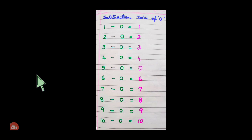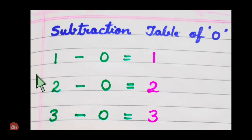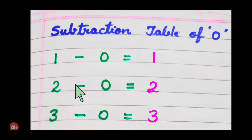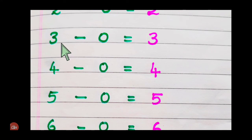Let's start with subtraction table of zero. Let's begin. 1 minus 0, 1. 1 minus 0, 1. 2 minus 0, 2. 2 minus 0, 2. 3 minus 0, 3. 3 minus 0, 3.